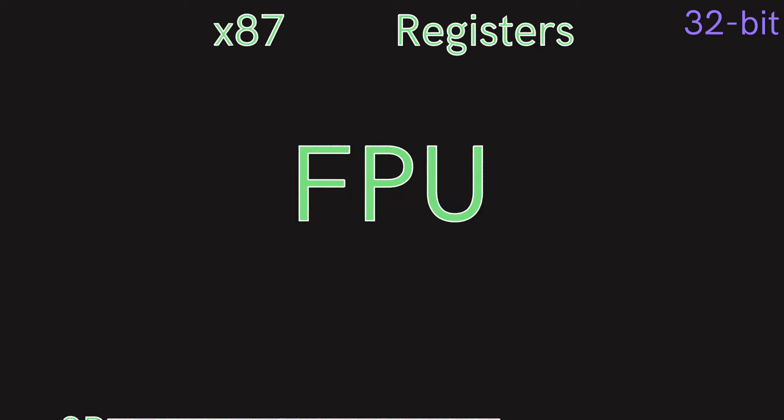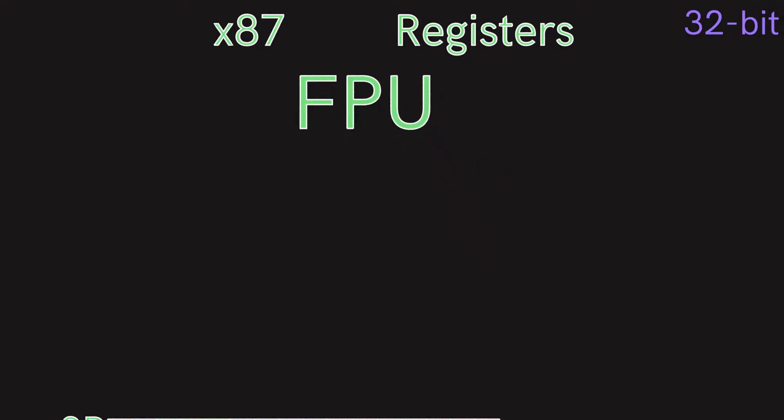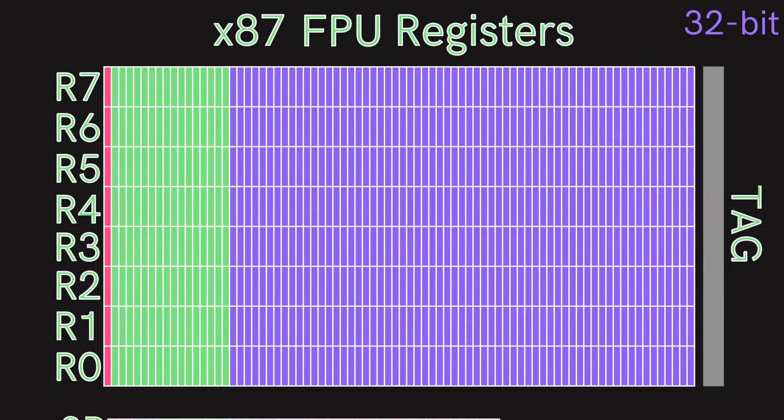Now let's look inside the x87 FPU. This coprocessor operates in parallel with the main core and is used to process floating point or decimal calculations. It has 8 80-bit general purpose registers, R0 to R7.